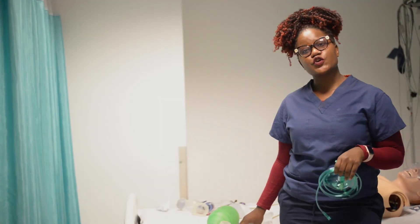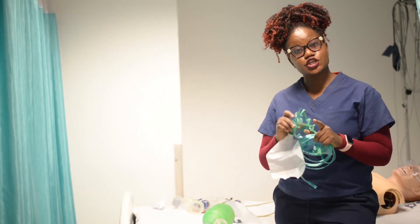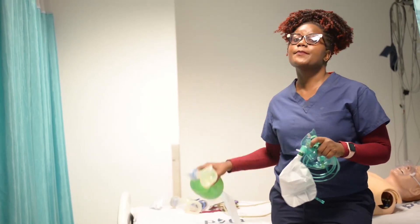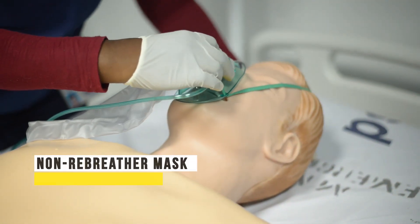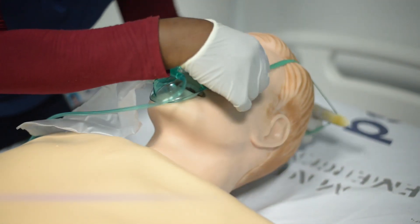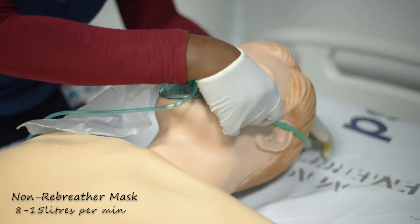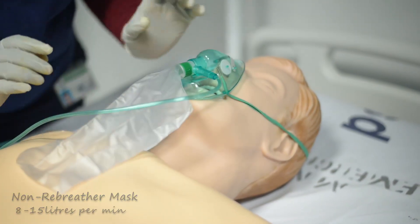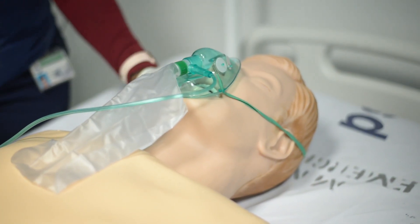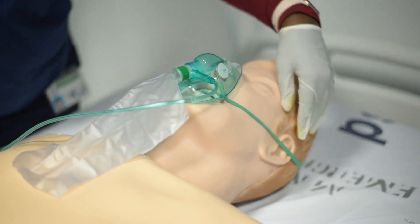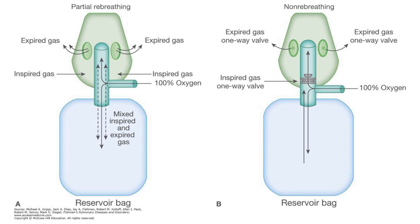And lastly, we're going to talk about a non-rebreather, a partial non-rebreather, and a BVM. A non-rebreather is a high-flow device that delivers 8 to 15 liters of oxygen per minute. It's an ideal device in emergency situations for patients who are responsive but desaturating. A partial non-rebreather is a non-rebreather without its valve.